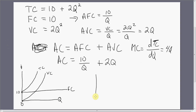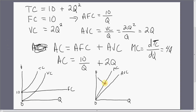Finally, let's graph marginal cost, average variable cost, and average cost. Starting with average variable cost, which is 2Q. Marginal cost is 4Q, so the slope of the marginal cost curve is twice as steep as the slope of the average variable cost curve. Average cost is going to first fall, but then begin to rise, approaching the average variable cost curve but never quite reaching it. As Q gets bigger and bigger, the fixed-cost term gets smaller and smaller, meaning average cost will start to mimic the average variable cost curve approaching 2Q — they'll never be equal, but it'll get closer and closer.